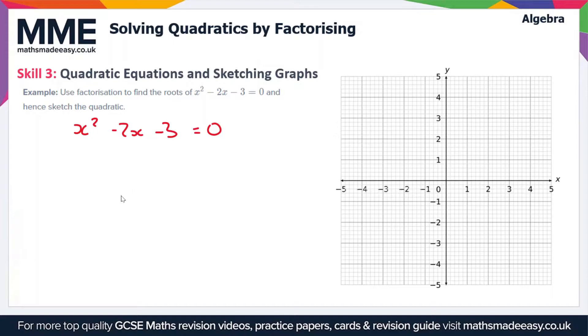So we'll start off by factorising it. We're looking for two numbers which multiply to give minus 3 and add together to give minus 2. So those numbers are going to be minus 3 and plus 1. So that's what's going to be in our brackets alongside x. So x minus 3, x plus 1 equals 0.